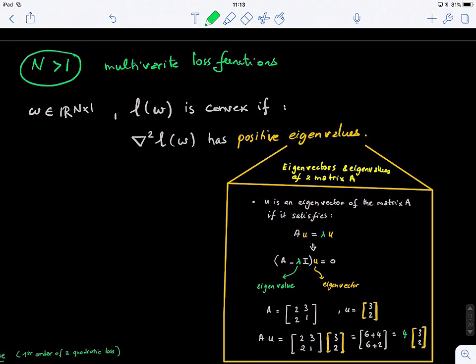To know that the function is convex, the Hessian matrix needs to have what we call positive eigenvalues. I know maybe some of you are not familiar with the concept of eigenvalue and eigenvector matrix decomposition or singular value decomposition, SVD.